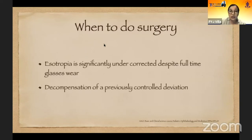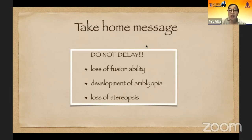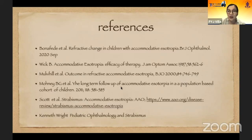When do we do surgery? Our goal is to align the eye with spectacle correction. However, if there is a residual isotropia, or if the eye has decompensated from a previously controlled deviation, then the patient can undergo surgery. As a take-home message, we should not delay managing refractive accommodative isotropia, because we do not want to lose fusional ability, we do not want the patient to develop amblyopia, and we do not want the child to further lose stereopsis. Thank you very much.